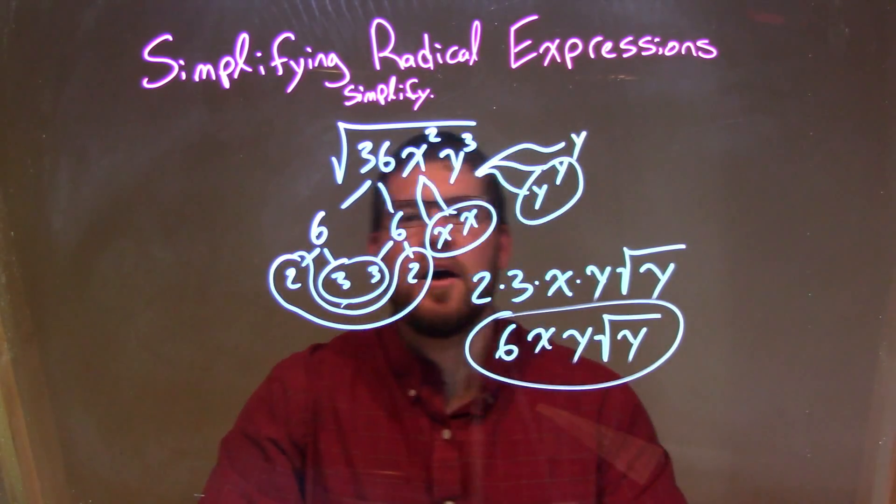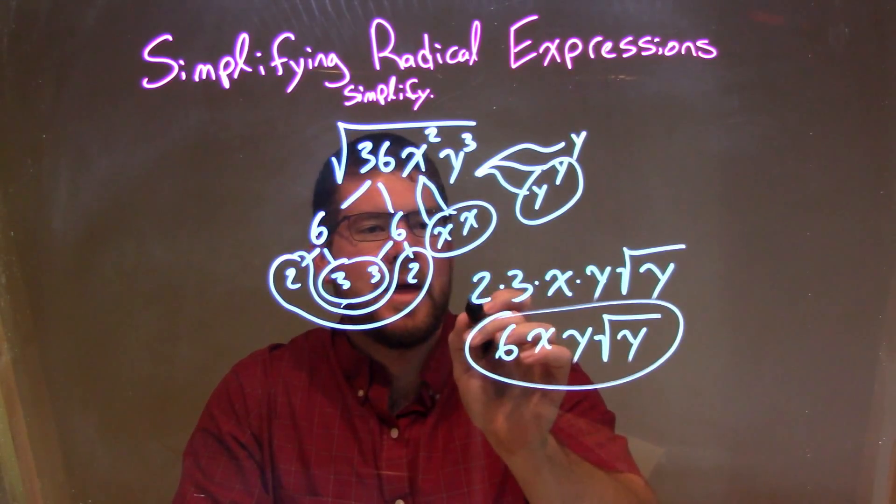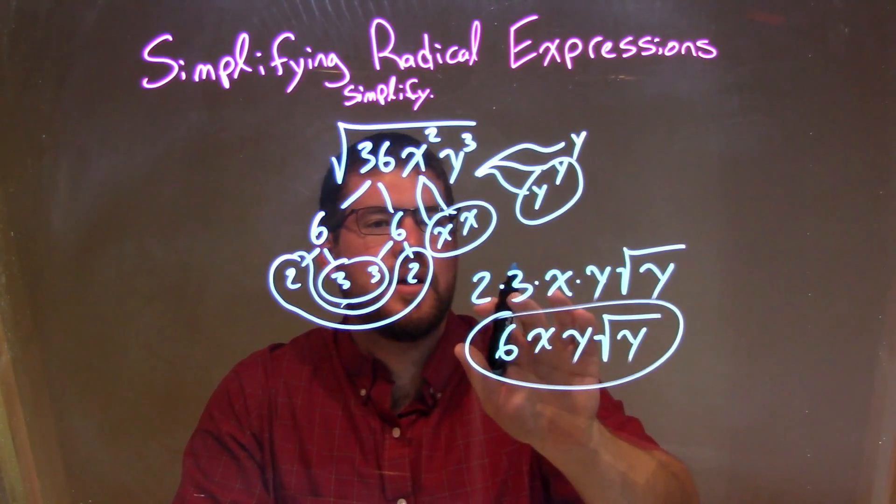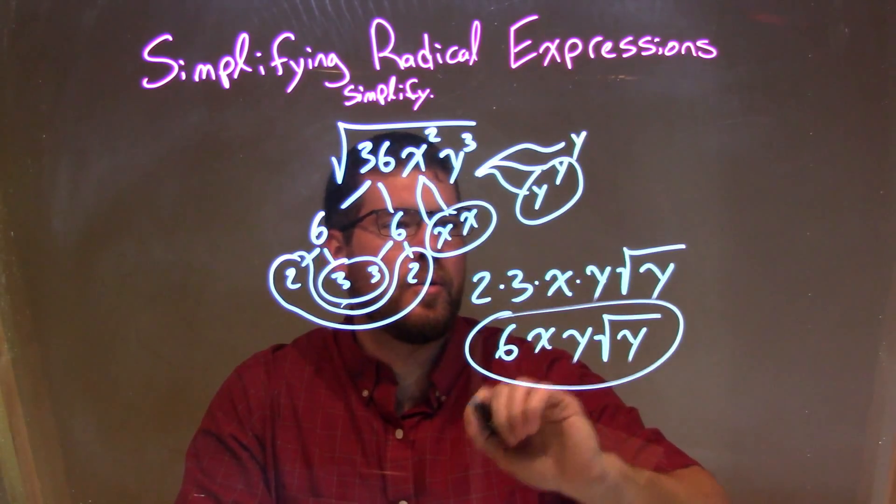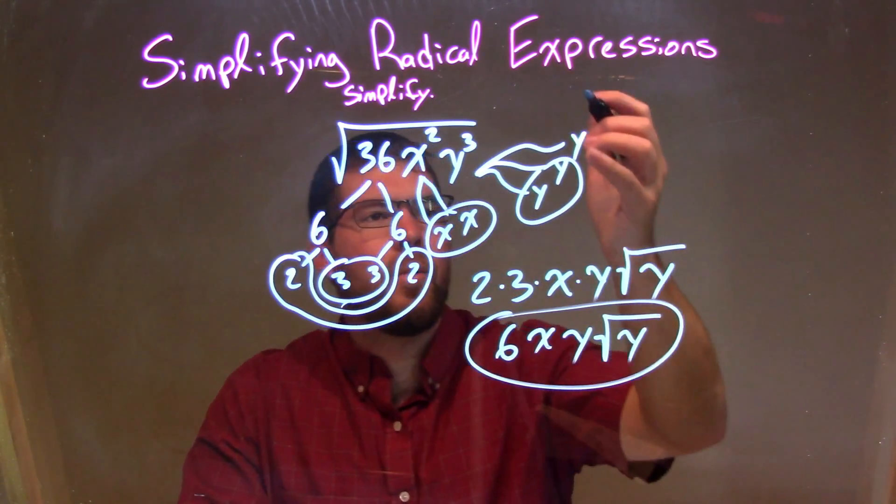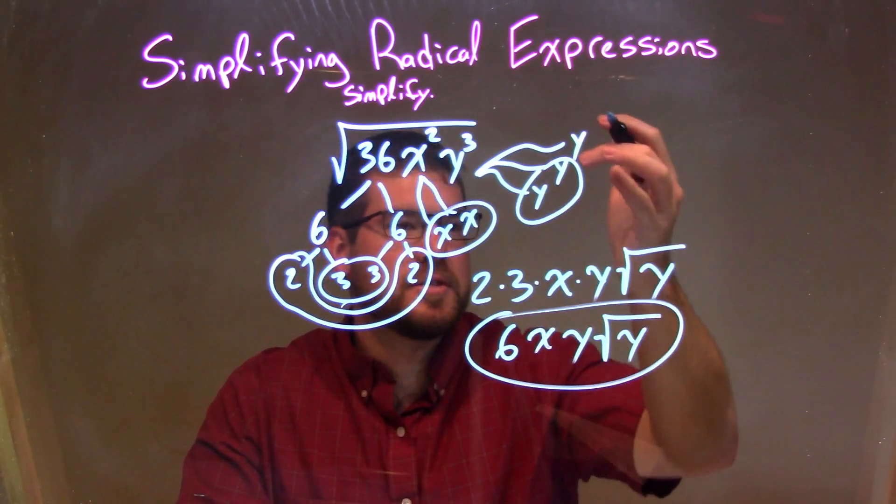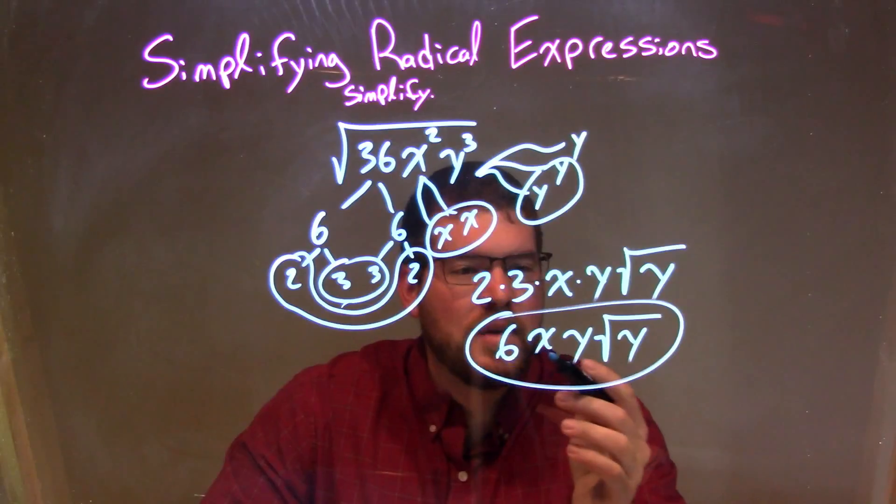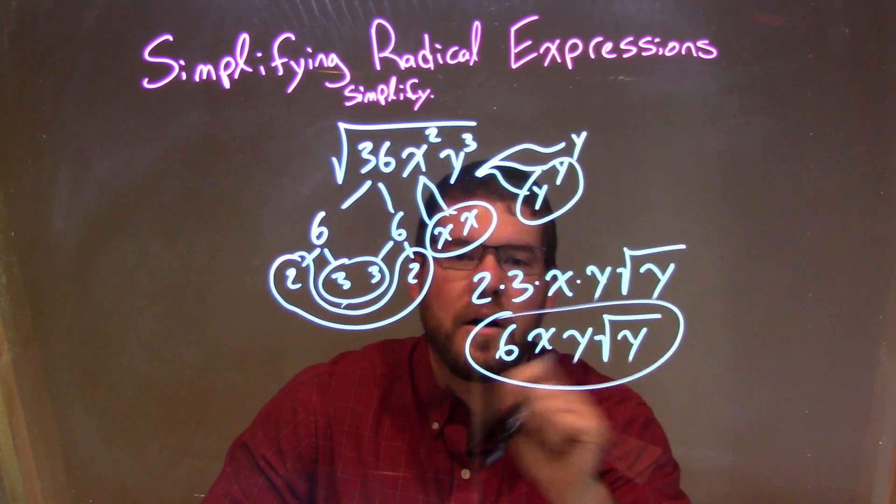Circled my pairs. For every pair that I circled, I put one of them on the outside. So I have the 2 times 3 here, and then times the x times the y, multiplication. Then the square root of what's left was not paired up, just that one y. Simplified, and we got a final answer of 6xy times the square root of y.